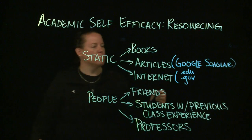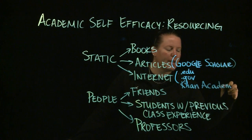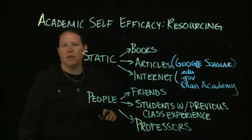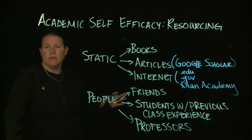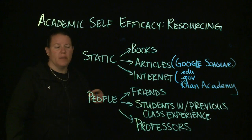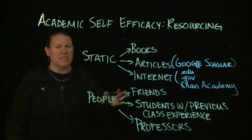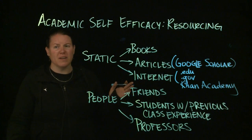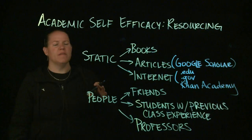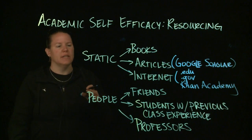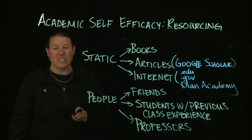Khan Academy tends to be fairly vetted and is a really acceptable place to go. There are also math sites that are well known to be very good in terms of their content. Try to stick to places that are .edu or .gov. Libraries sometimes have collected curated lists — for chemistry, for instance, they've identified acceptable websites. Look into your library's resources because that narrows things down very easily.